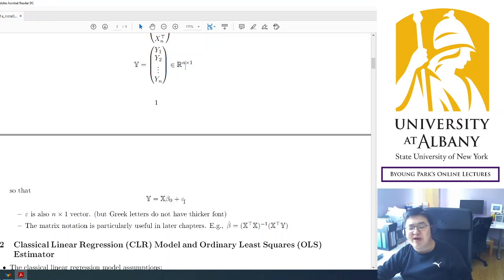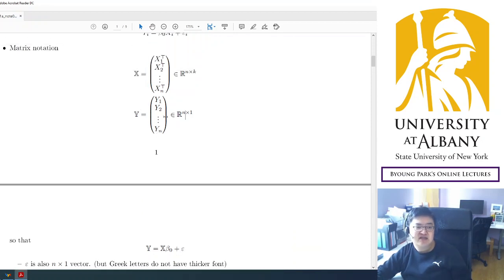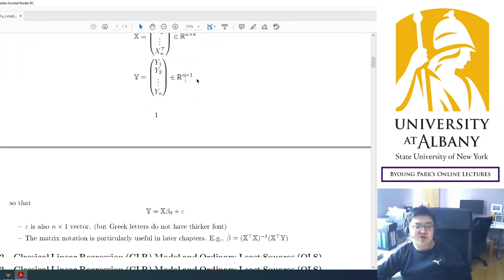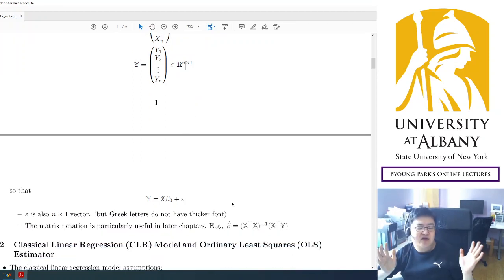Epsilon. So in my typeset, epsilon does not have that boldface like capital font. But usually epsilon does not matter. Because in this case, the reason why I use matrix notation is to denote that it's the full data. But epsilon, of course, we don't observe epsilon. So there is no data for epsilon. So it's not a big problem in many cases.